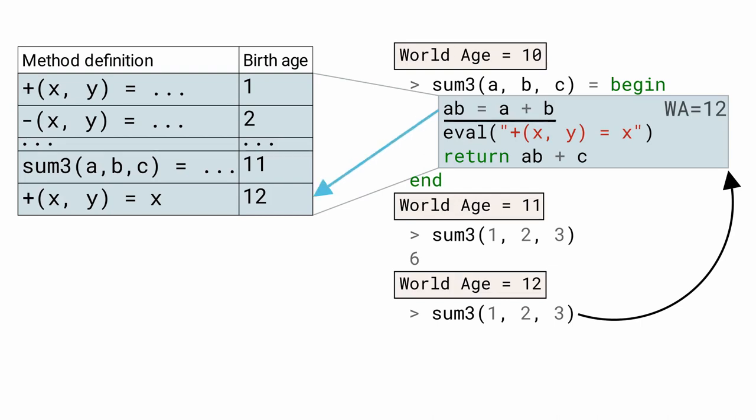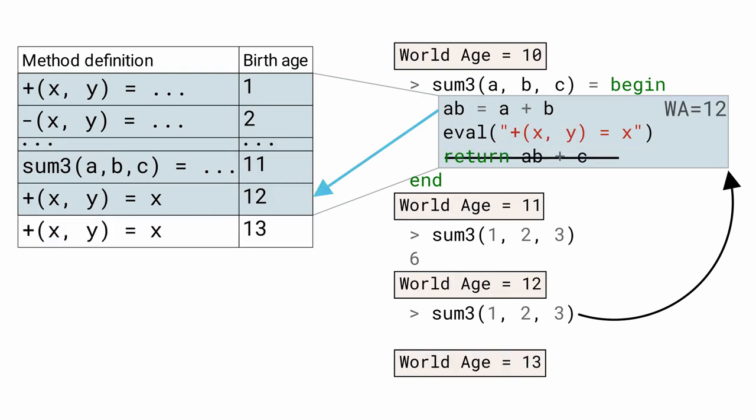Then, once again, eval adds a definition of plus to the table. As this new definition is too new for ab plus c, both calls to plus dispatch to the definition born at age 12. Thus, the second call to sum3 returns 1.